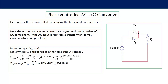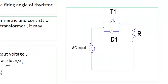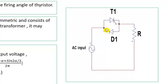Here power flow is controlled by delaying the firing angle of the thyristor. You can see the circuit diagram. In the circuit diagram, I have connected one thyristor and one diode, and the input voltage is AC. So in the positive half cycle this thyristor will conduct, and in the negative half cycle current will flow in the other direction and diode one will conduct.